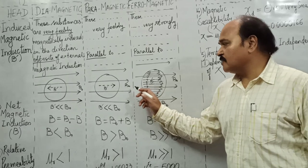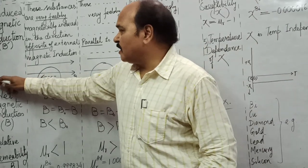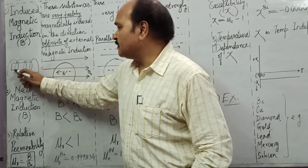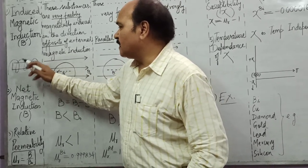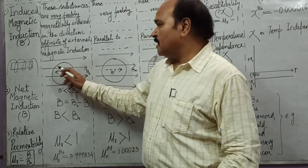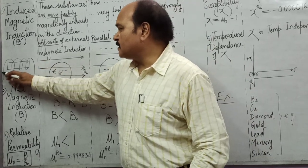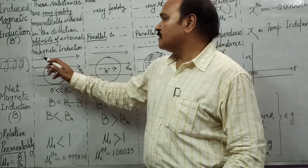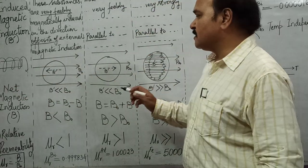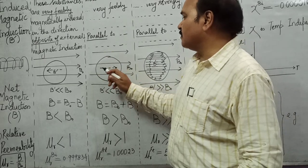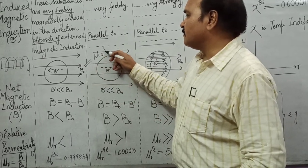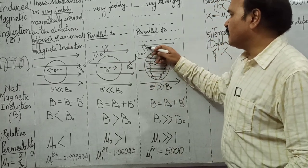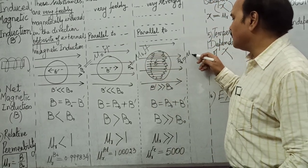B0 is applied with the help of a solenoid. We place the substance inside the current-carrying solenoid, and as the current passes through the solenoid the magnetic field B0 acts on the substance in all three situations. B0 is nothing but μ0 times H, which we have already discussed in the last lecture.